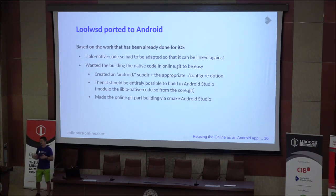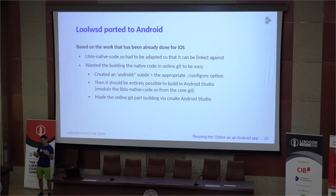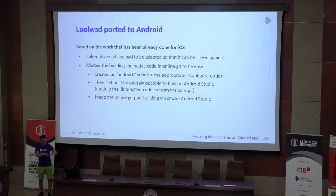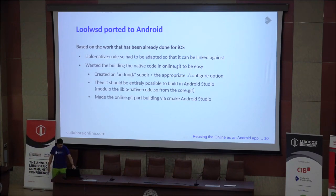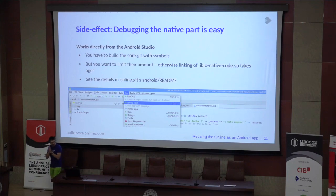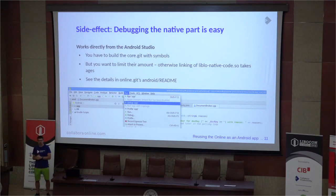The inconvenient step for people not used to Android development is the first step of actually building liblo native code in core.git, but other than that it is as people are used to. A side effect is that debugging the native part is much easier than it was years ago — directly from Android Studio you can open the C++ code, start the debug app, and it just works.